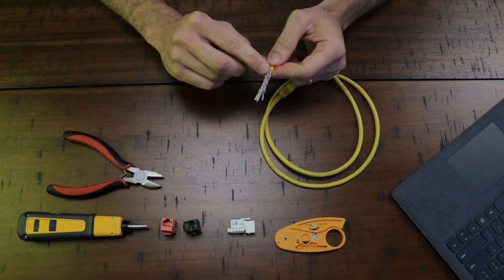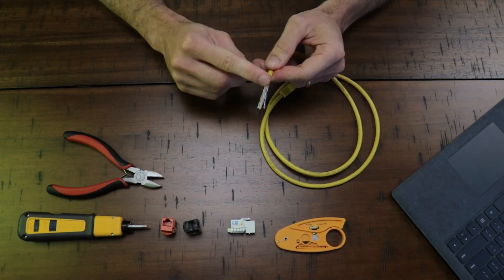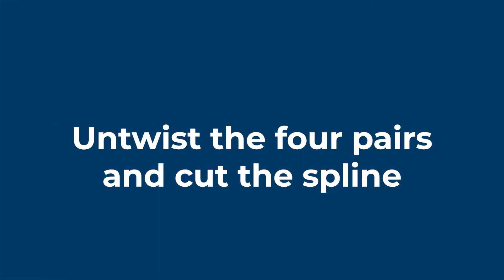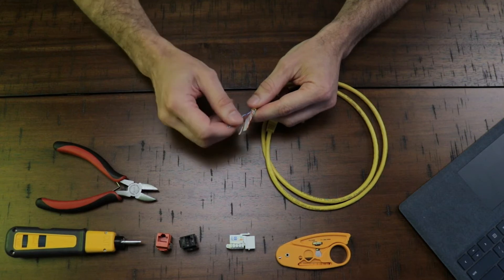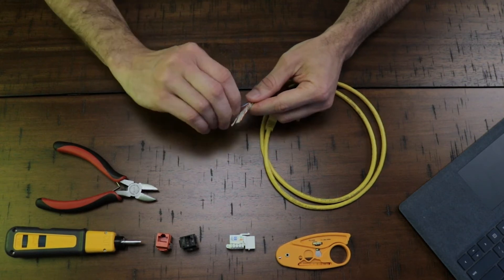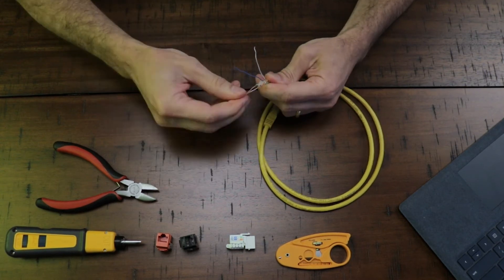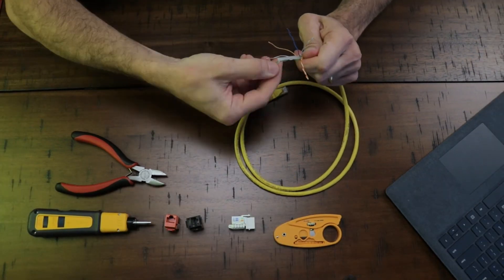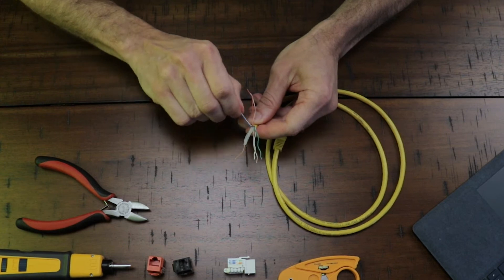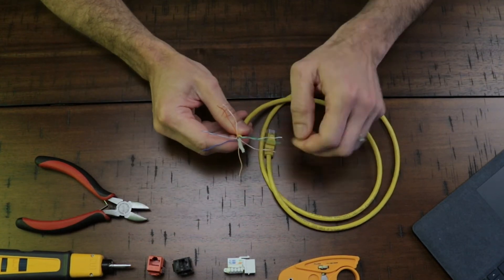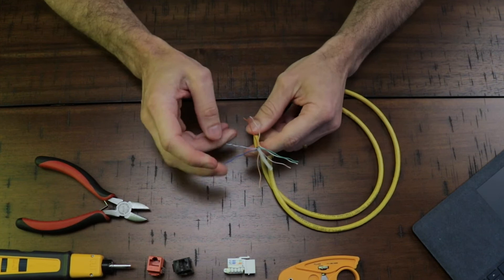The third step is to untwist all the pairs. So let's start with the blue one. If you are repairing a termination where the cable is cat six and above, you're gonna see one of these plastics on the inside.